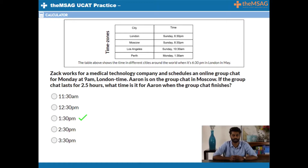Did you get 1.30pm? Option C was the correct answer. We are now going to focus on how to get this answer quickly, ideally in 10 seconds or less. We believe the best way to answer such questions is to focus immediately on the time difference between the two cities in question.